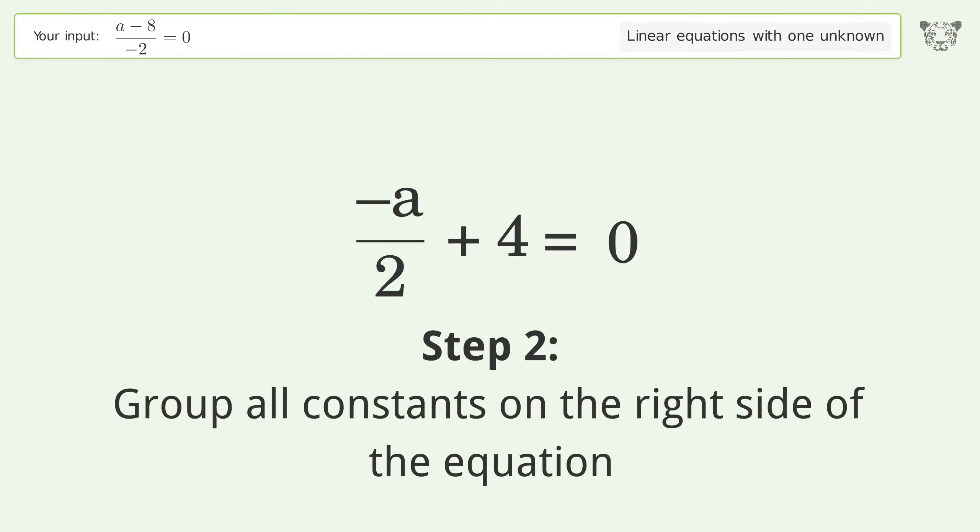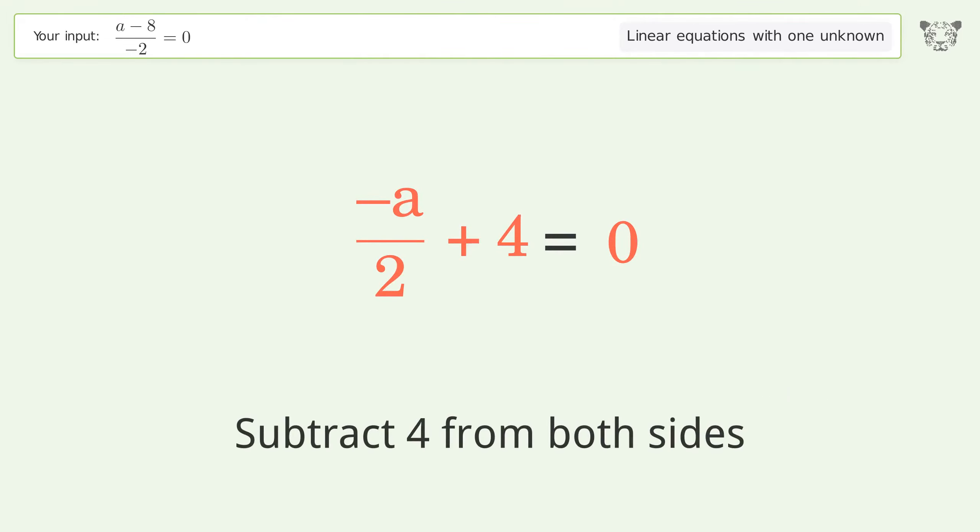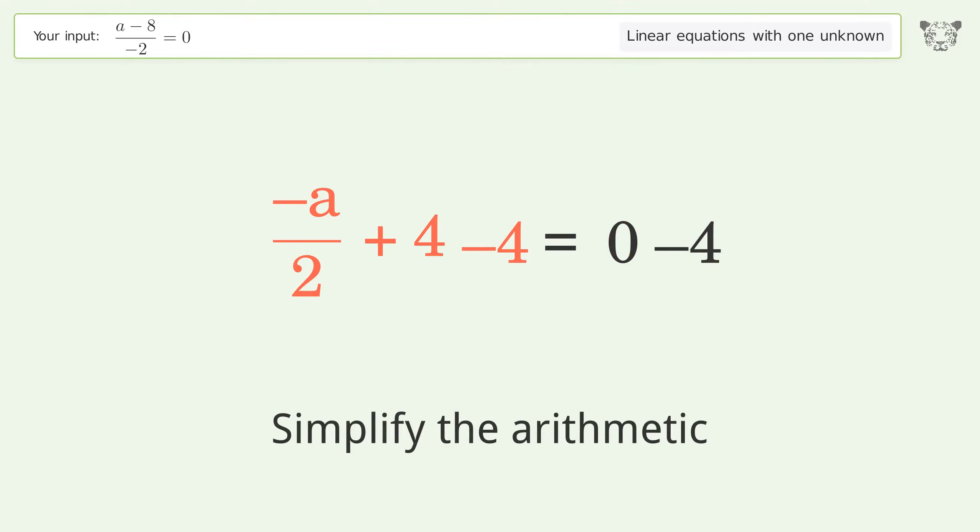Group all constants on the right side of the equation. Subtract 4 from both sides. Simplify the arithmetic.